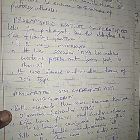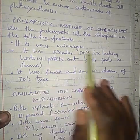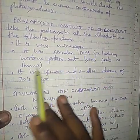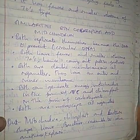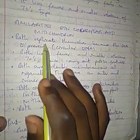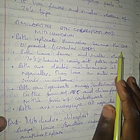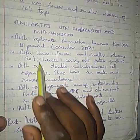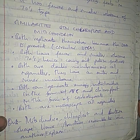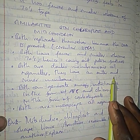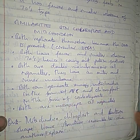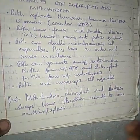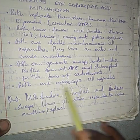Regarding the prokaryotic nature of Chloroplasts — to be discussed in the endosymbiotic theory — like prokaryotic cells, chloroplasts have: microscopic size, circular DNA, and fewer small ribosomes. Similarities between Chloroplasts and Mitochondria: both replicate themselves; both have fewer small ribosomes (70S); both are double-membranous organelles with outer and inner membranes; both can generate energy — mitochondria generate ATP, chloroplasts generate carbohydrate; and both are microscopic.